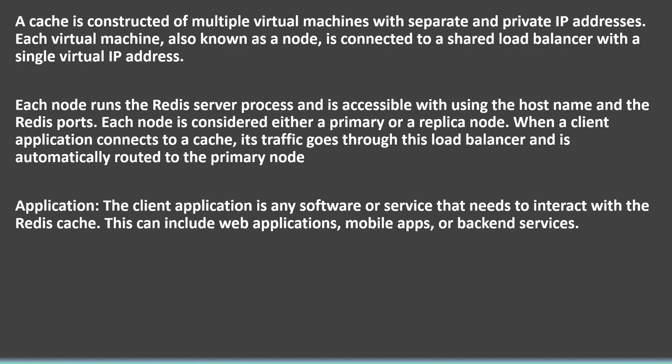Each node is considered either a primary or replica node. When a client application connects to a cache, its traffic goes through this load balancer and is automatically routed to the primary node.